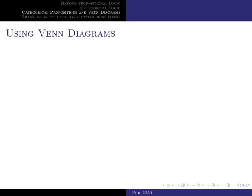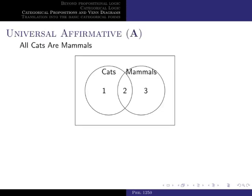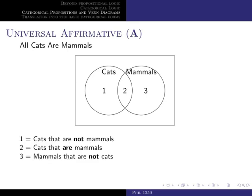In this video we're going to use Venn diagrams to represent different categorical propositions. A Venn diagram is a way of visually representing the logical relations between sets or categories of things. Here we have two overlapping circles — one represents the set of cats and the other represents the set of mammals. We also have three regions.